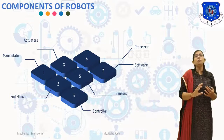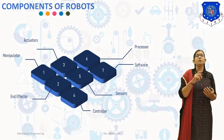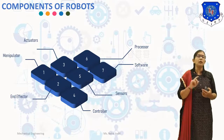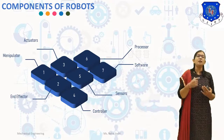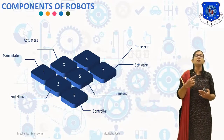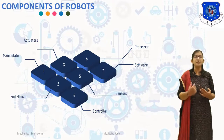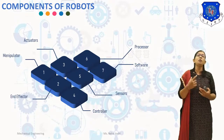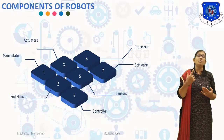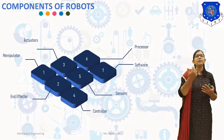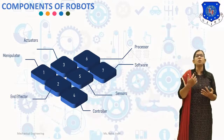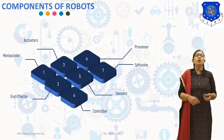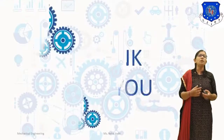The last component is software. There are generally three groups of software used in robotics: the operating system for operating the computer, robotics software for the operation of the robot, and application programs for the operation of peripheral devices. This concludes the topic of robotics — its components and industrial applications. Thank you for watching this video.